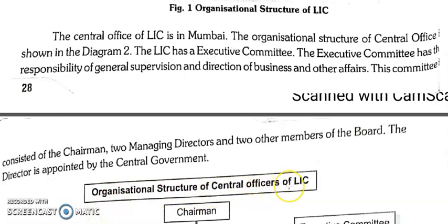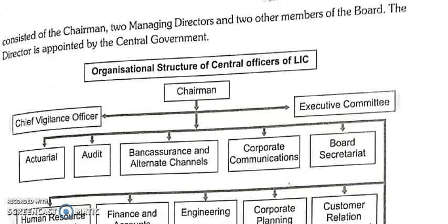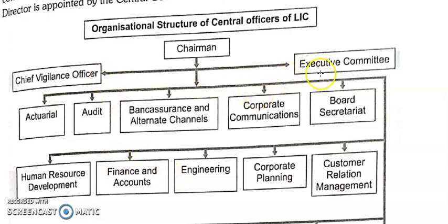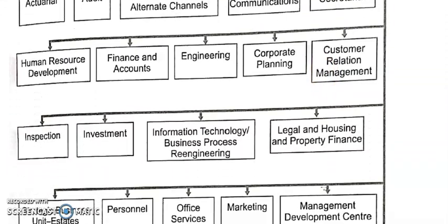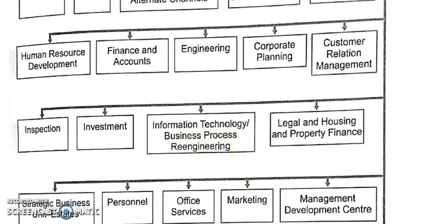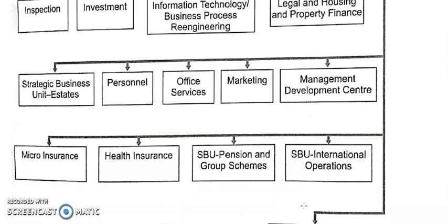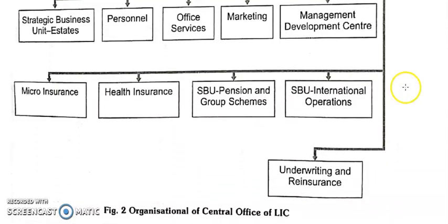The central office organizational structure has the chairman and chief vigilance officer at the top, with an executive committee. Under it are departments including accounts, engineering, corporate planning, customer relationship management, inspection, investment, information technology, business processing, business process re-engineering, legal and housing, property finance, strategic business units, estates, personnel, office services, marketing, management development centers, micro insurance, health insurance, pension and group schemes, international operations, and underwriting and reinsurance.